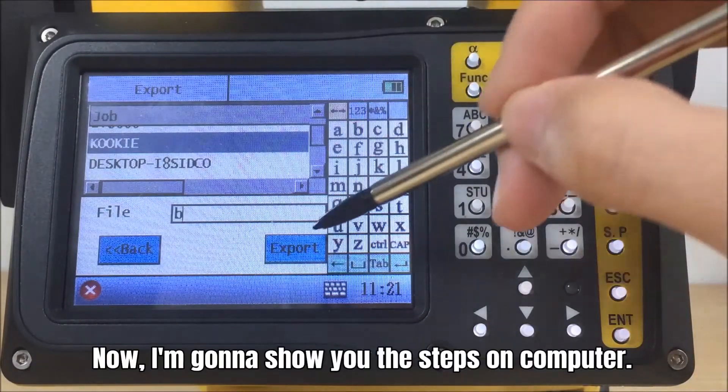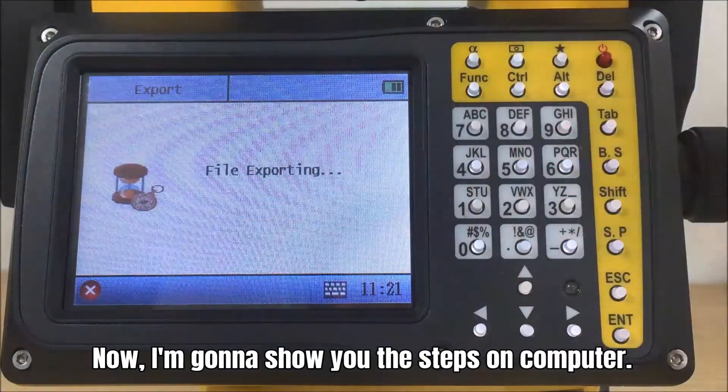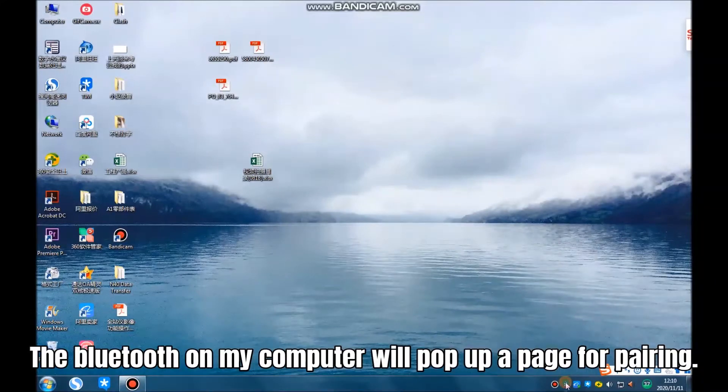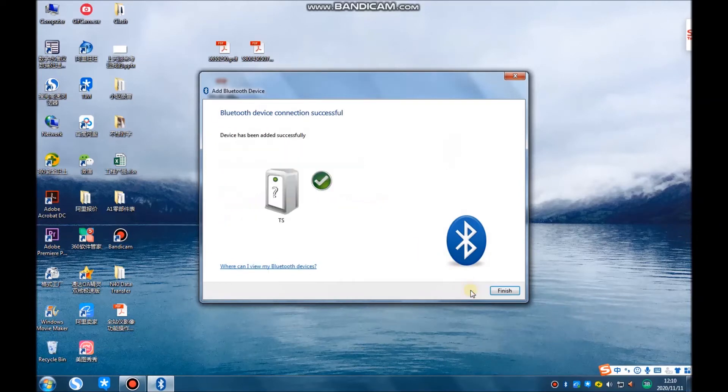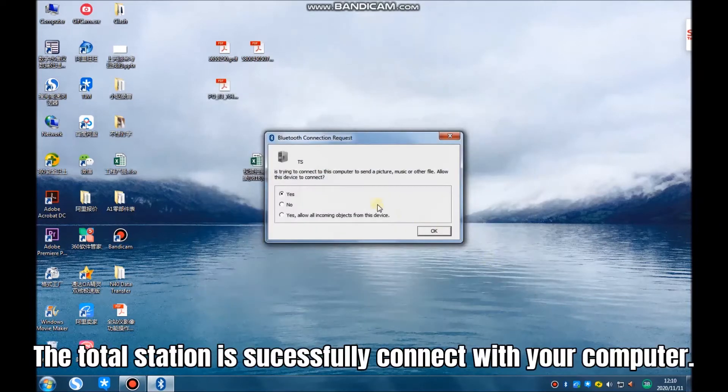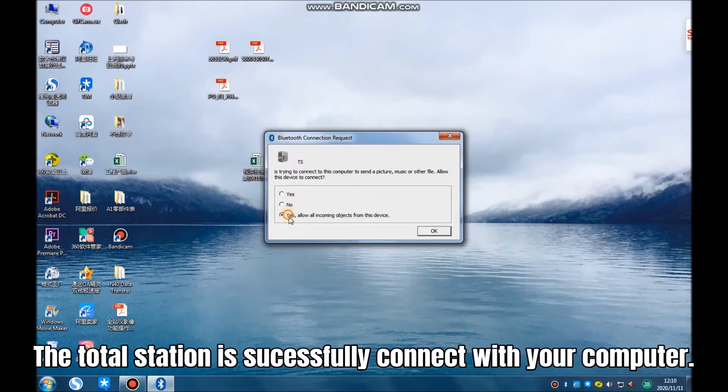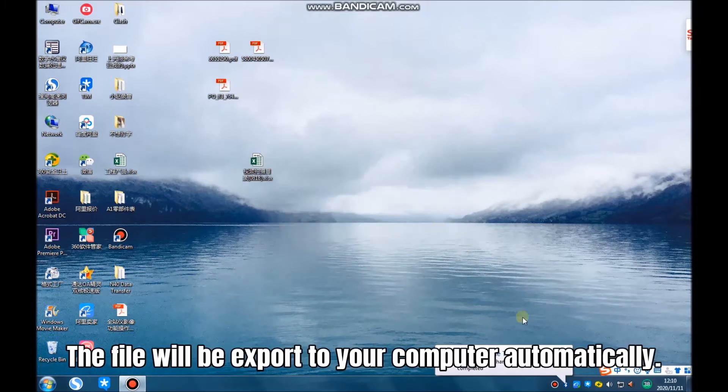Now I'm gonna show you the steps on computer. The Bluetooth on my computer will pop up a page for pairing. Enter the pairing code, such as 1234, to match the device. The total station is successfully connected with your computer. The file will be exported to the computer automatically.